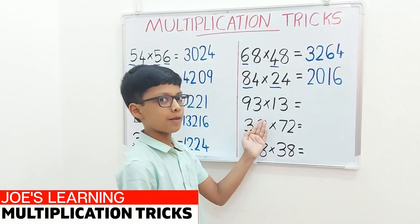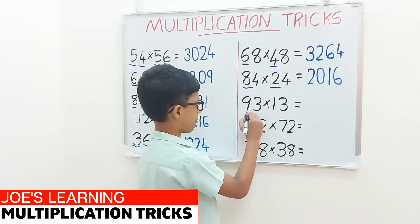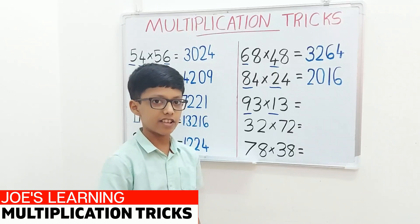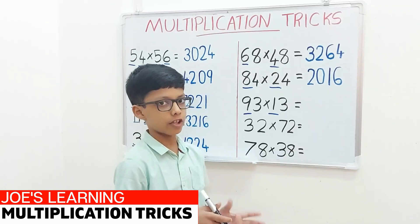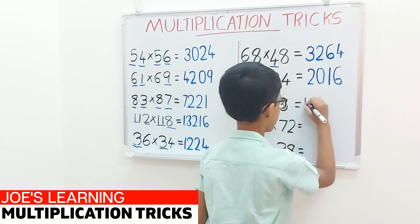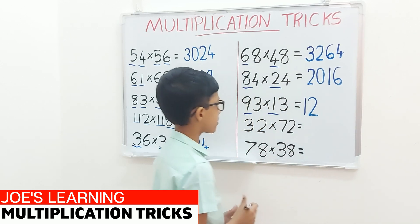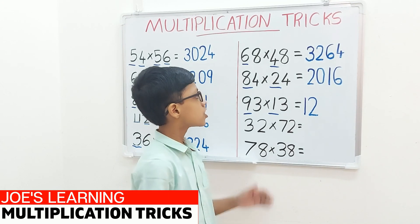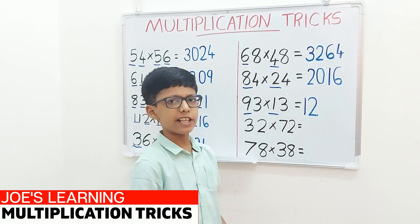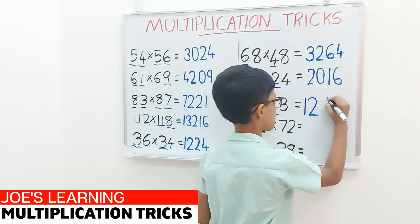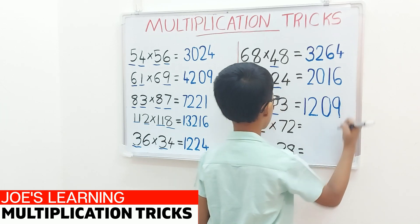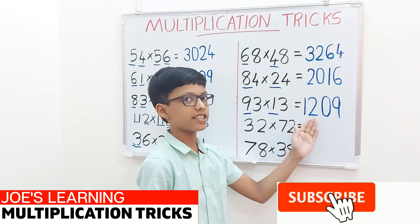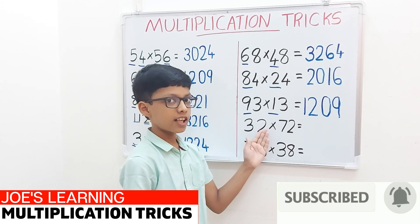Now let's move on to the example 93 multiplied by 13. First we have to look at the digits in the tens place, 9 and 1, and multiply them together. That equals 9. Now we have to add the ones digit to it. So 9 plus 3 equals 12. Now we have got the first two digits of our product. To find the next two digits, multiply the digits in the ones place. So 3 multiplied by 3 equals 9, but we need a two digit number, so write it as 09. So 93 multiplied by 13 equals 1209.